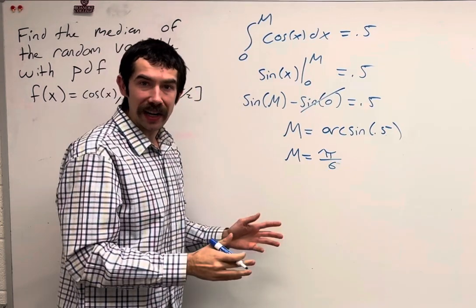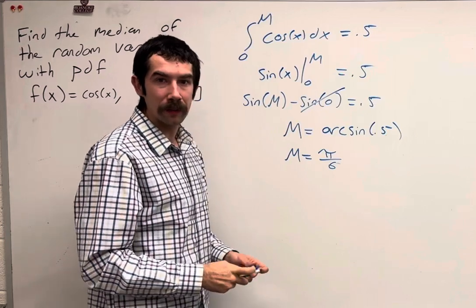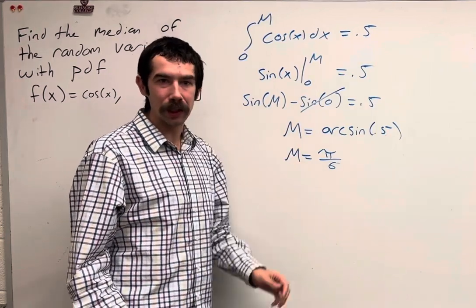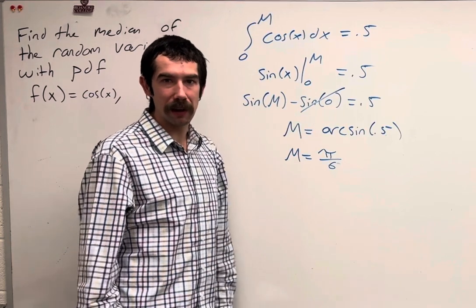So the median of this random variable is pi over 6. That was a quick one, so thanks for watching, and make sure to like and subscribe if you like these videos.